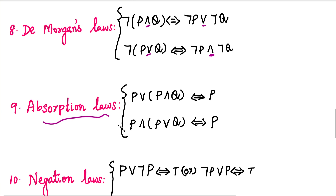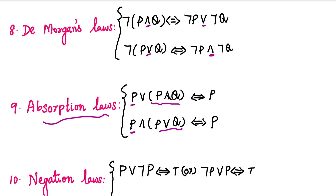Next is the absorption law. The two statements are P and Q. The form is P OR (P AND Q), and this is equivalent to P. The outer connective is OR, and there is an AND inside the bracket. The result absorbs to just P.